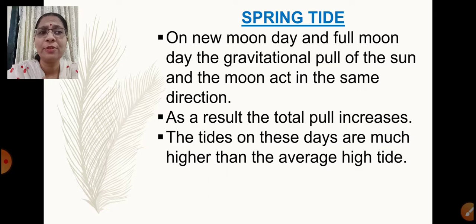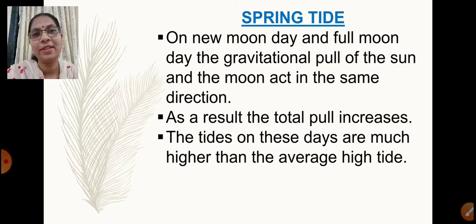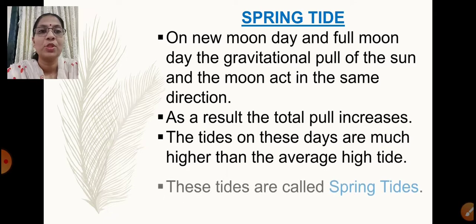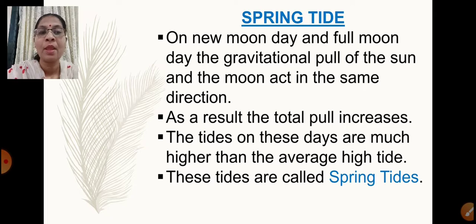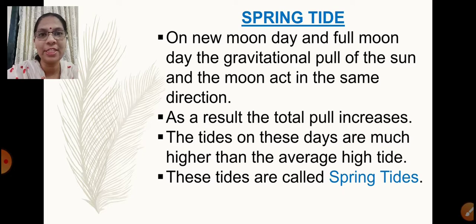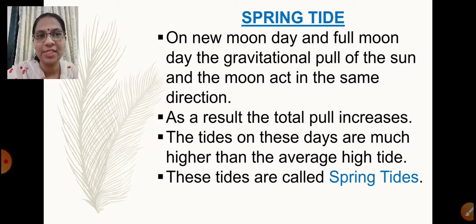On the new moon day and the full moon day, the high tide will be at its highest compared to other average high tides. These tides are called spring tides. Spring tides occur on the new moon day and full moon day. On these days the gravitational force of the sun and moon acts in the same direction, so the total pull increases. As a result, the high tides which occur on these days are higher than the average high tide.